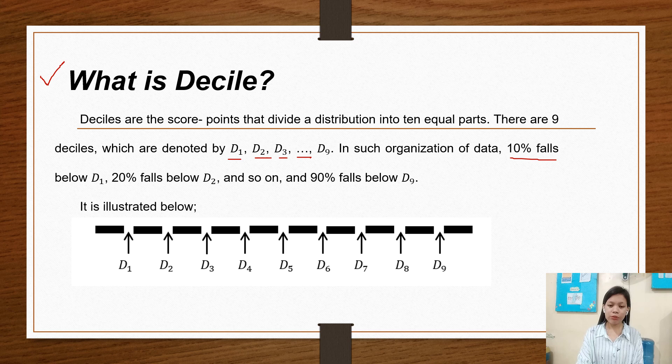In such organization of data, 10% falls below D1, 20% falls below D2, and so on, and 90% falls below D9. It is illustrated below.